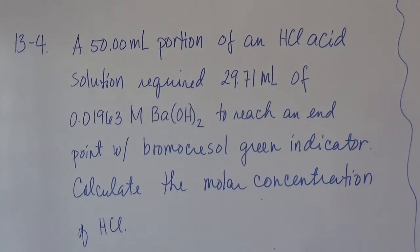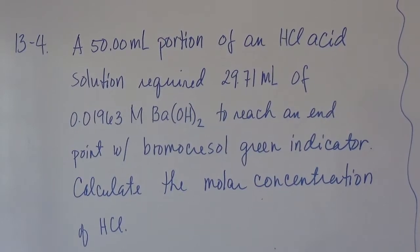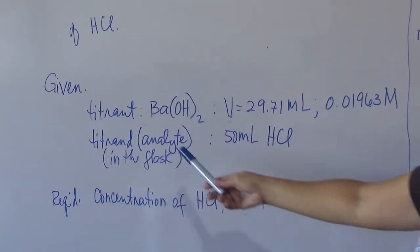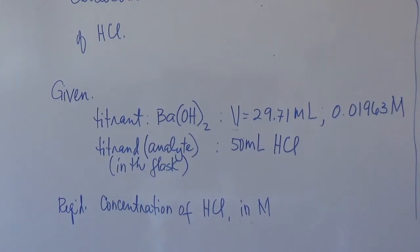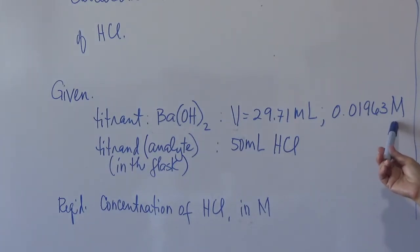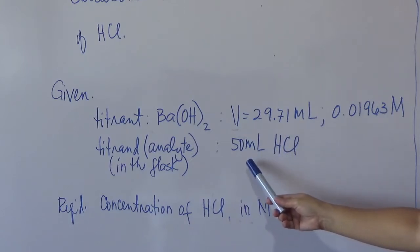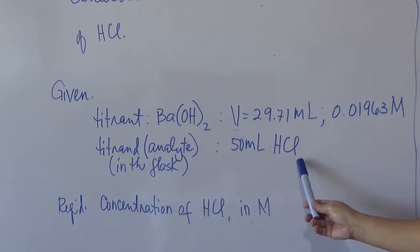We are going to calculate the molar concentration of the hydrochloric acid. The 50 ml hydrochloric acid is the analyte, with unknown concentration. The barium hydroxide is the titrant — placed in the burette — with a known concentration of 0.01963 molar, and it takes 29.71 ml to neutralize 50 ml of hydrochloric acid.